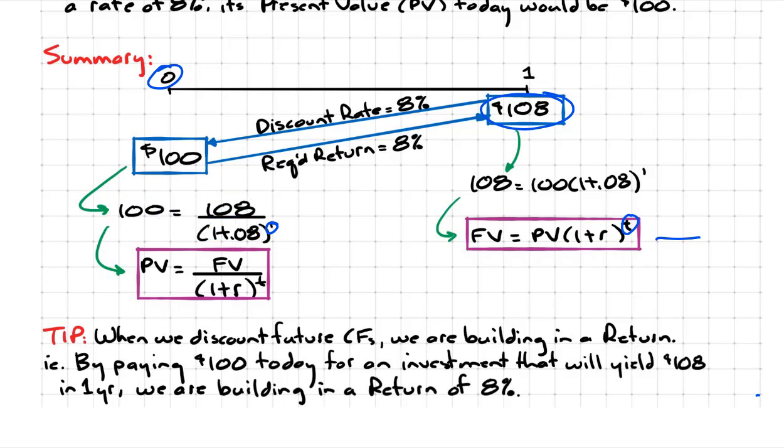The other thing we could have done is just rearrange this framework that we had for future value, so you're just solving for present value instead. You can see it's future value divided by 1 plus R to the power of T.